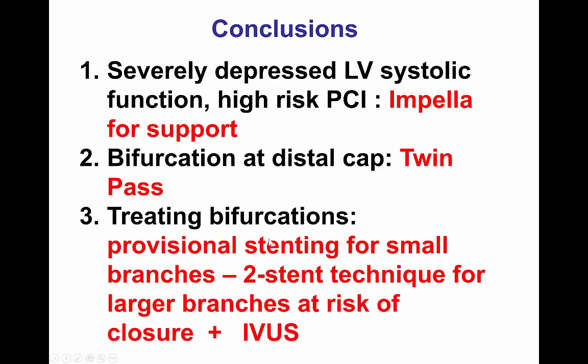Finally, regarding bifurcations: we had the bifurcation of the circumflex and obtuse marginal and then the distal left main. The bifurcation of the OM and distal circumflex involved smaller vessels and was treated with a provisional technique, whereas the left main bifurcation — given the large vessels and the need to preserve patency of both vessels — was treated with a two-stent technique, essentially a mini crush. Importantly, intravascular ultrasound helped us detect under-expansion of the stents and allowed treatment before finishing the PCI.